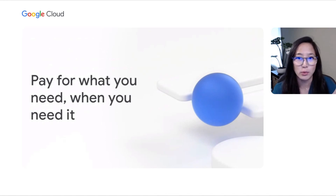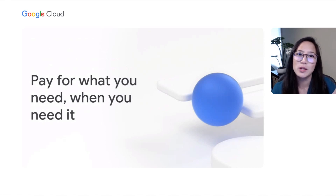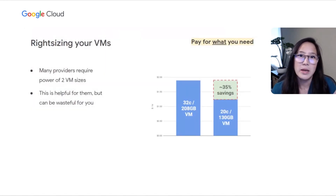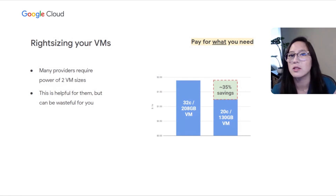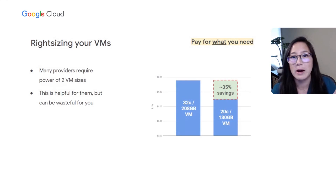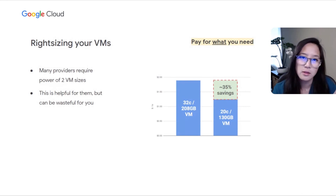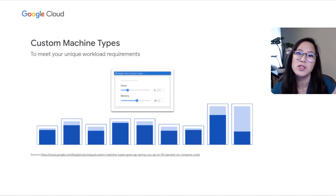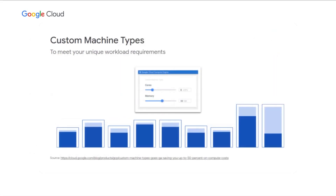Another important consideration in reducing costs is reducing waste — optimizing compute resources and reducing running hours. Many providers require you to create power-of-two VM shapes, such as 2, 4, 8, 16, 32, or 64 cores, which makes bin packing easy for the provider but wasteful for you. For example, if you need 20 cores and 130 gigabytes of RAM, you'd need to launch a 32-core VM and pay for 12 cores you don't use. Unique to GCP, Google offers custom machine types, allowing you to pick precisely the amount of memory and CPU your app needs so you don't pay for anything more.